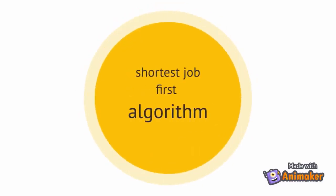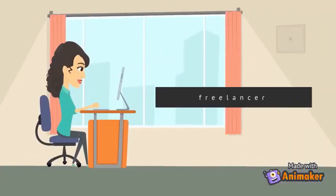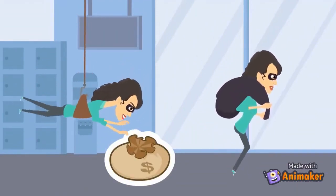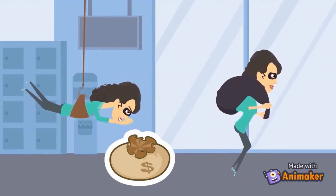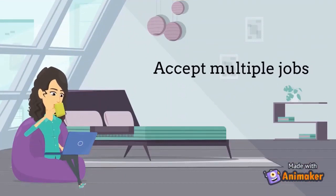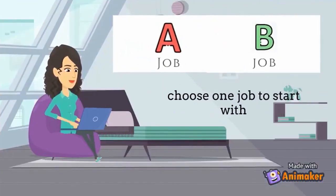So now we will talk about Shortest Job First. Meet Lina — Lina is a freelancer. Because of financial problems, Lina decided to steal money, but then she decided not to do it. So she thought of a new idea: to accept multiple jobs at the same time and find a way to accomplish all of them within their deadlines. She then saw two jobs that could be finished in one month and decided to choose those two first.